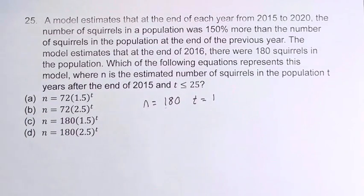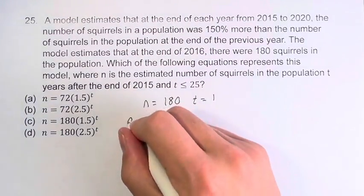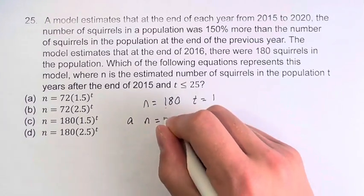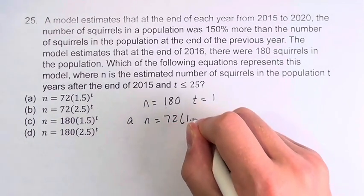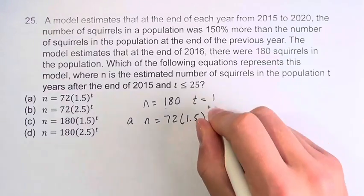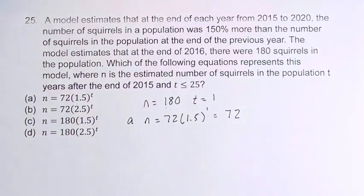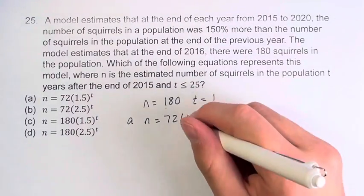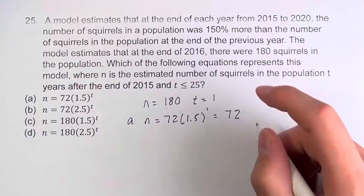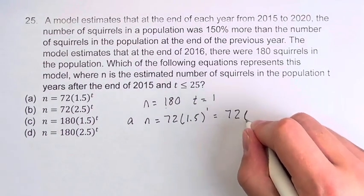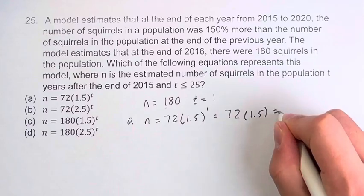So we have option a: n is equal to 72 times 1.5 to the t, and we're plugging in 1 for t. So this is 72 times 1.5 to the 1, which is just 1.5, it's just itself. So we have 72 times 1.5, which is 108.